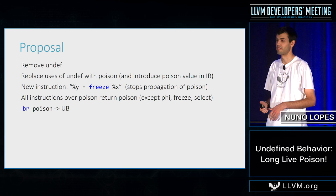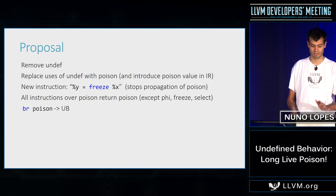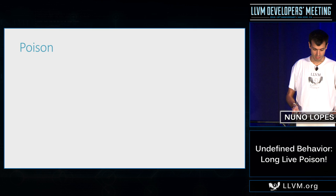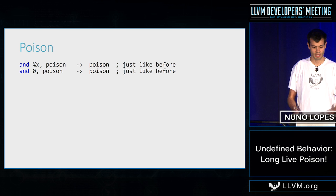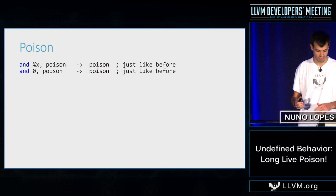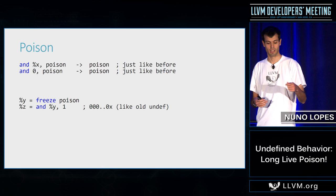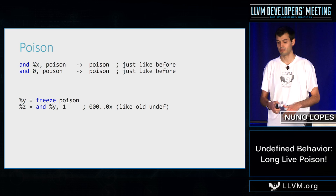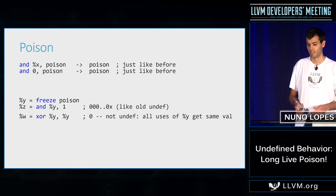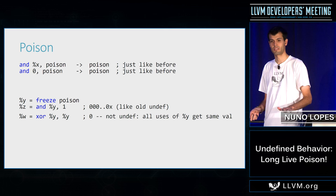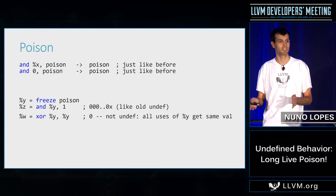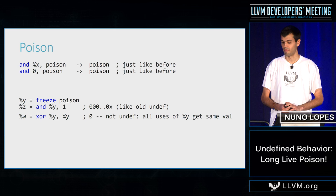This is a very simple proposal, and I'll show how it solves all the problems described. Poison semantics remain unchanged — and of zero and poison is still poison. Freeze, the new instruction, returns a non-deterministic value. If we do y AND zero, we get zero. If we do y AND one, the first bits are all zero and the last bit can be zero or one, just like old undef. The new thing is: if we do XOR of y with y, we are guaranteed to get zero — unlike old undef, where XOR of undef with undef would give undef. All uses of a frozen value see exactly the same value.